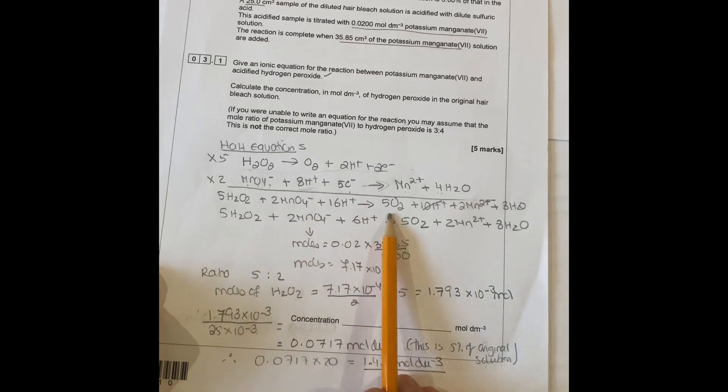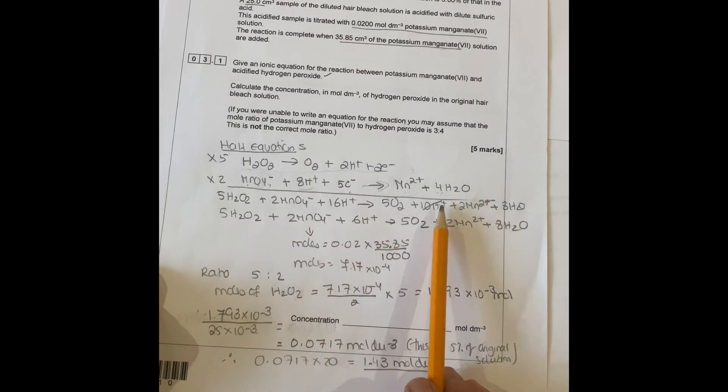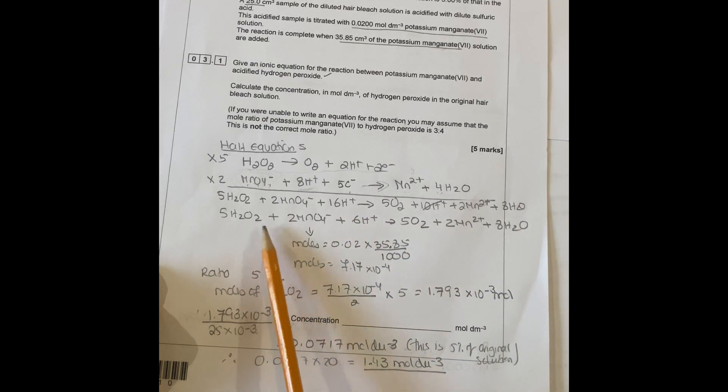Adding those two together, you cancel anything in common. You take 10, 18, 16, and you end up with 5H2O2 + 2MnO4- + 6H+ goes to 5O2 + 2Mn2+ + 8H2O.